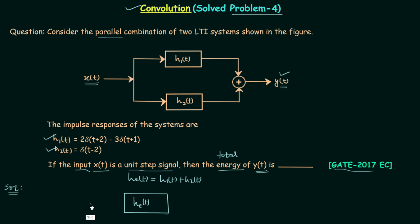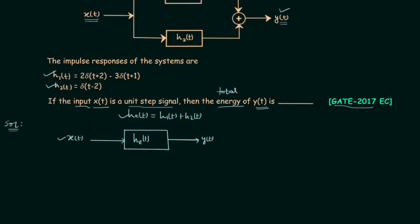We already have H1(t) and H2(t) in the problem. The input will remain the same — x(t) — and the output is y(t). We have the input, we have the impulse response, so we can calculate the output y(t). The mathematical tool we use is convolution: y(t) = x(t) convolved with H_E(t), or equivalently x(t) convolved with [H1(t) + H2(t)].